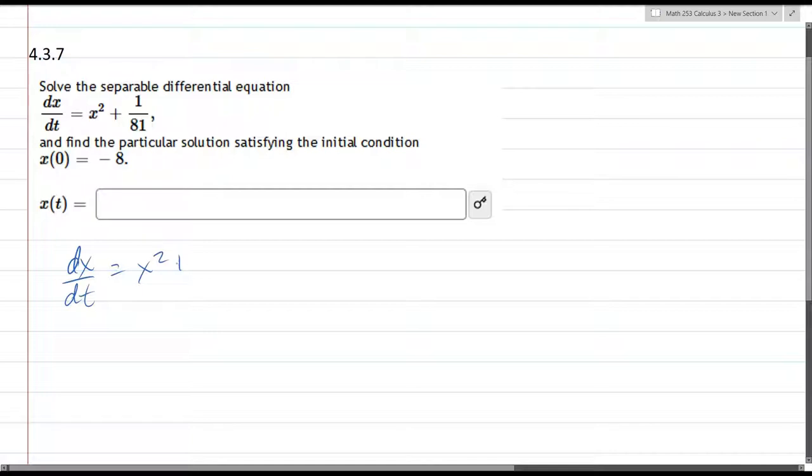So we have x squared plus 1 over 81. We want to separate the x's and the t's. So what I need to do is move the dt to the right side and then everything else to the left side.